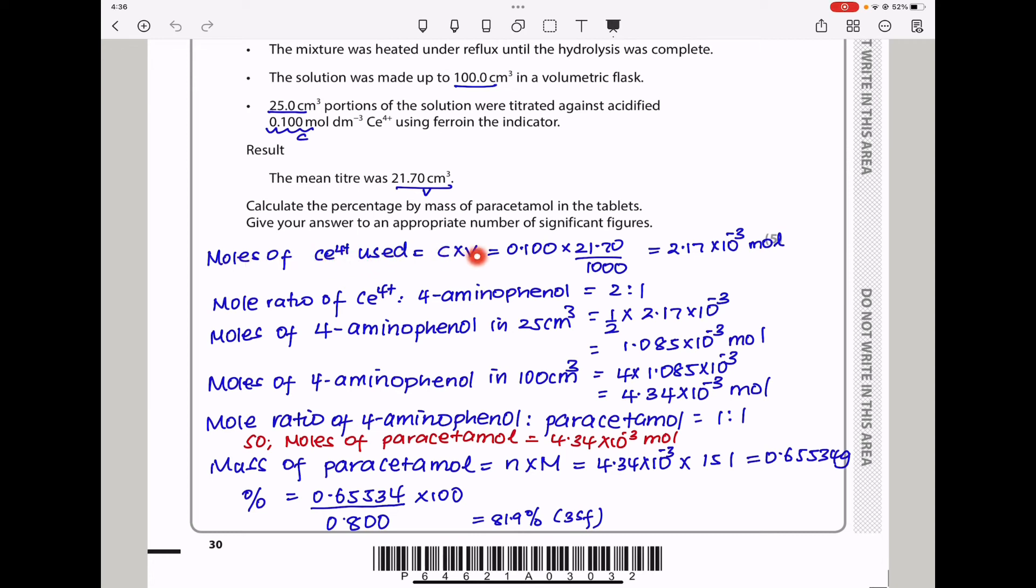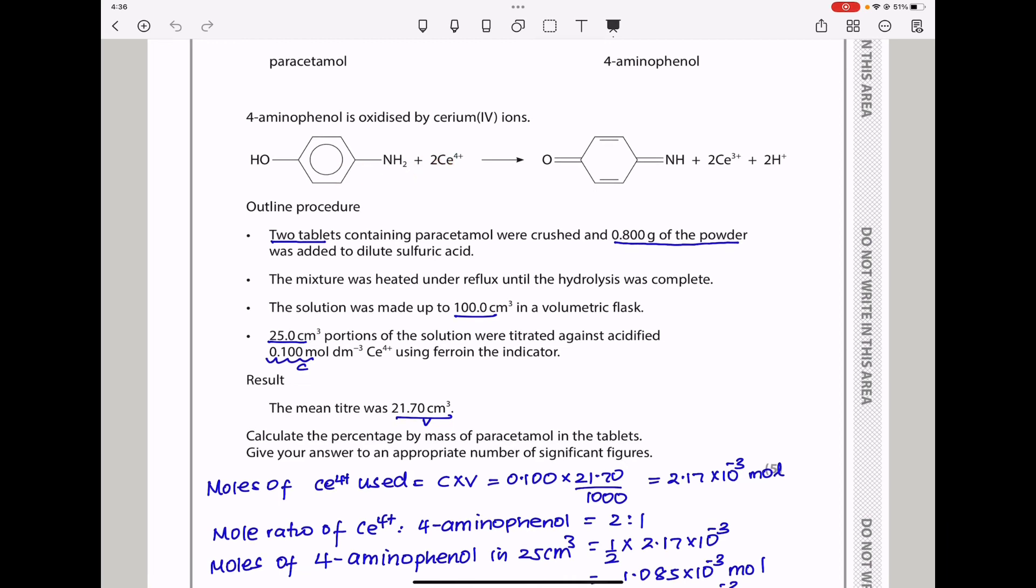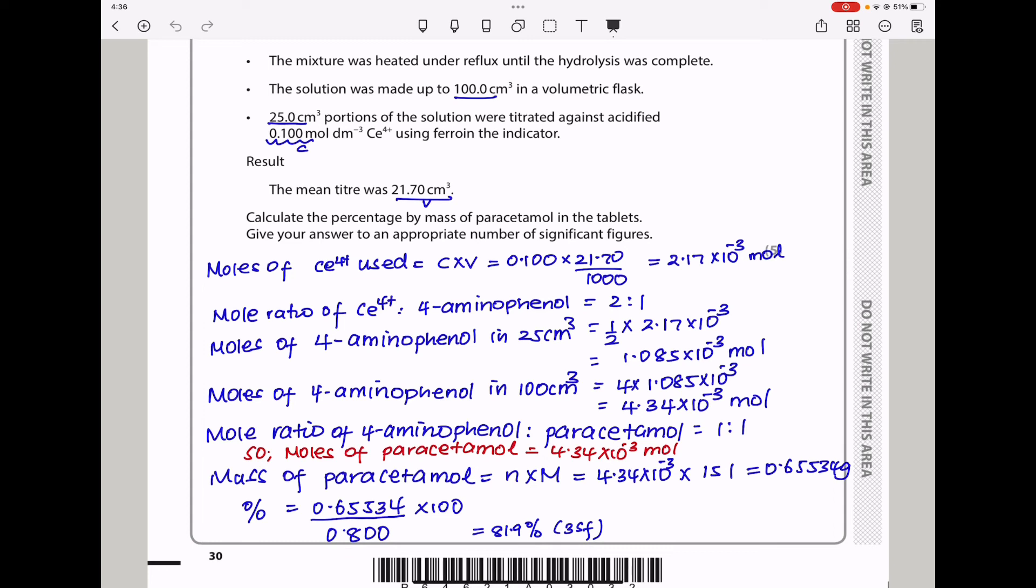The results are here. We have the mean titer was 21.70 centimeters cubed. Calculate percentage by mass of paracetamol in the tablets. Here I began by moles of Ce4+ used. Number of moles should be concentration times volume which is the concentration given 0.1 times the mean titer which is 21.7 divided by 1000 and that gave me the number of moles. When we go back to the equation we can see the mole ratio is going to be 2 to 1 and therefore the number of moles of 4-aminophenol are going to be 1 over 2 times that. So I got 1.085 times 10 to the power negative 3 moles.